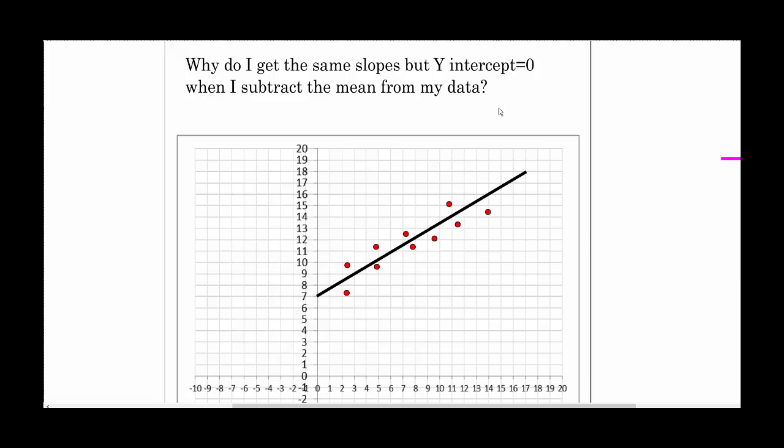One reason for doing this is it makes the notation when you're discussing some of the algebra behind ordinary least squares a little simpler to write if you do it on mean-centered data.